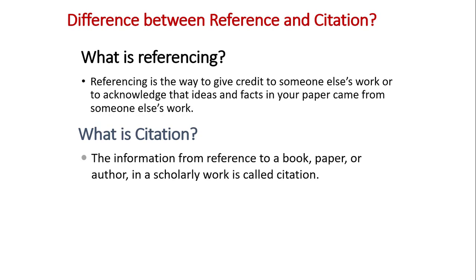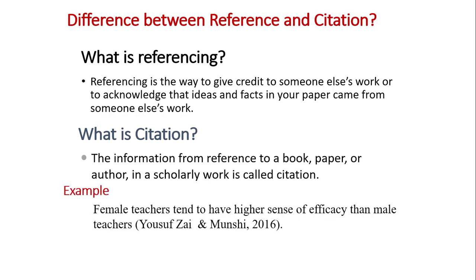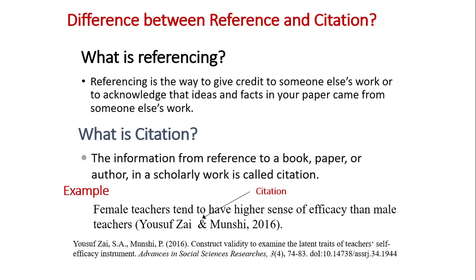We refer the name of the author and at the end we provide the detail about the particular publication. For example, this is one sentence I extracted from a thesis: 'Female teachers tend to have higher sense of efficacy than male teachers' — Yusuf, Zay and Munshi. This statement is not the author's primary sentence; he or she quoted someone else's work. So Yusuf, Zay and Munshi is the in-text citation. At the end, the author provided details like the name of the paper, journal name, and further details. This is called references.